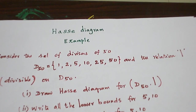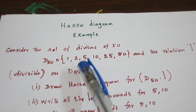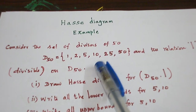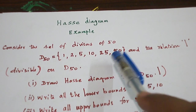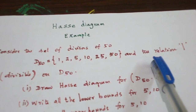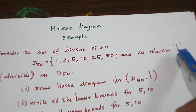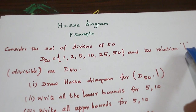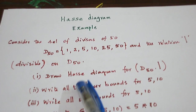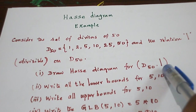This is the problem. Let us take the divisors of 50. These are the numbers that divide 50: 1, 2, 5, 10, 25, 50. And in this, define your relation: A is related to B if A divides B. Draw the Hasse diagram for this set under this relation.